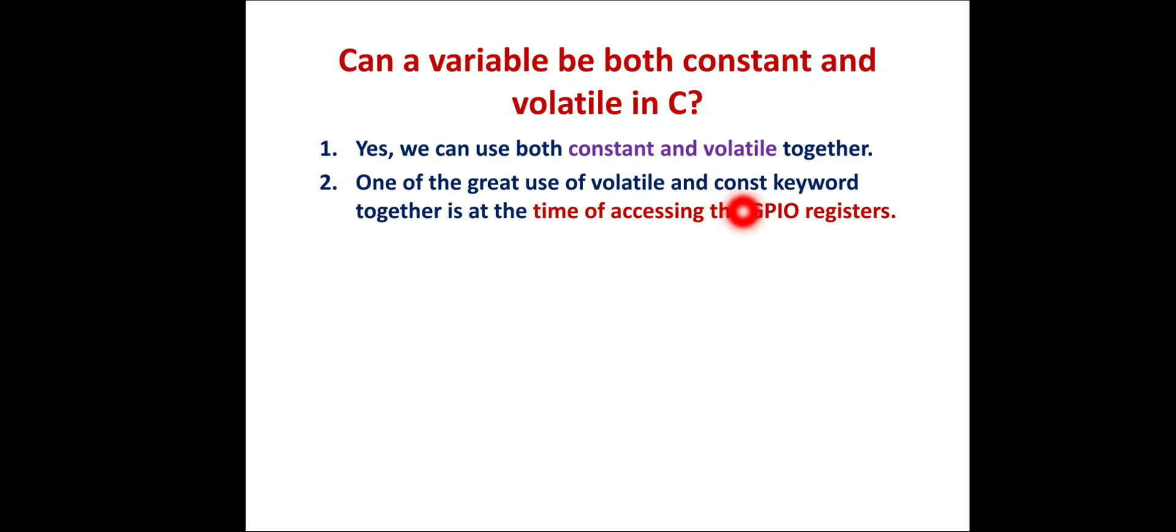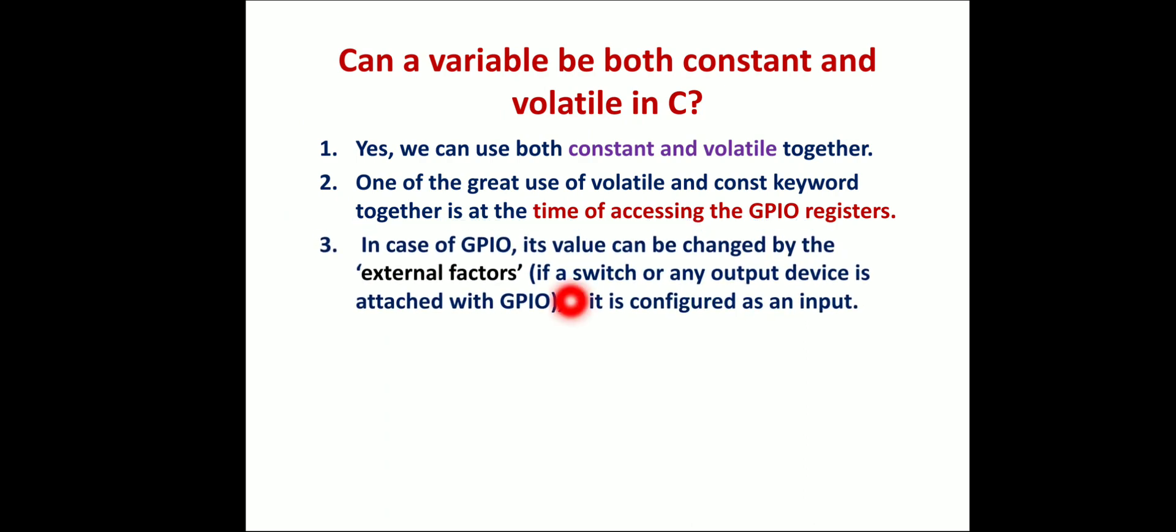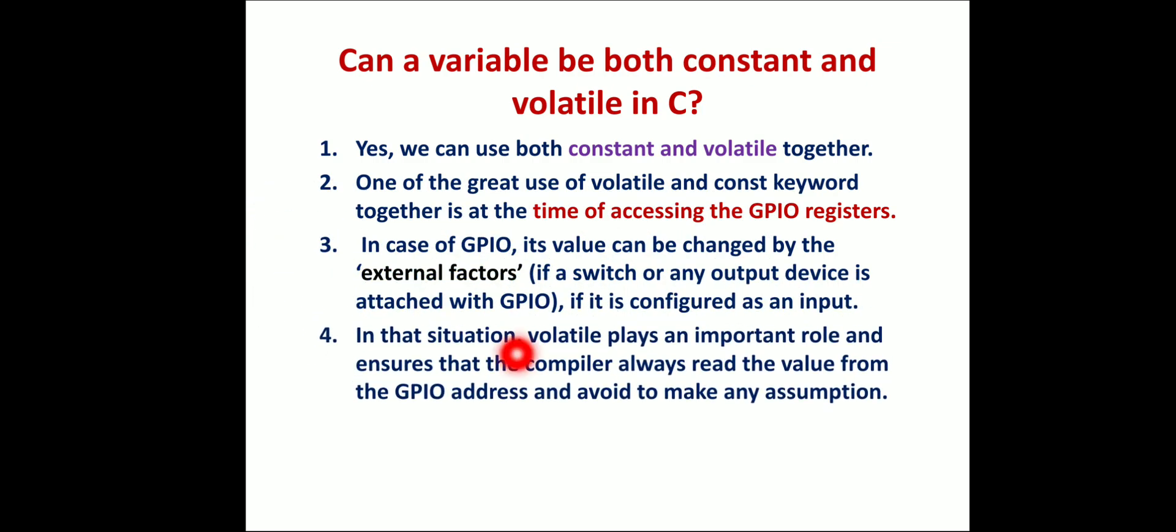One of the greatest uses of volatile and const together is when accessing GPIO registers. In case of GPIO, its value can be changed by external factors - if a switch or output device is attached to GPIO configured as input. In this situation, volatile ensures that the compiler always reads the value from the GPIO address and avoids making any assumptions. Constant also plays a major role in embedded systems.